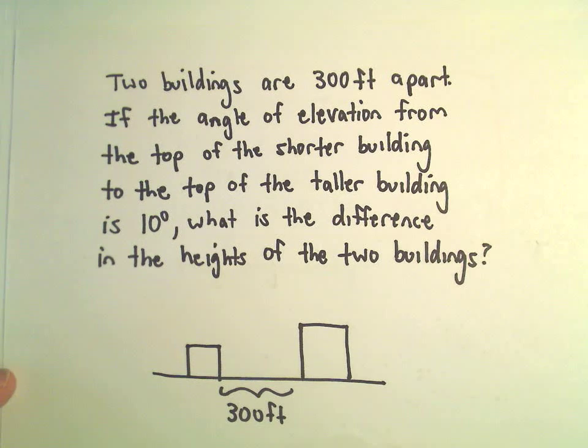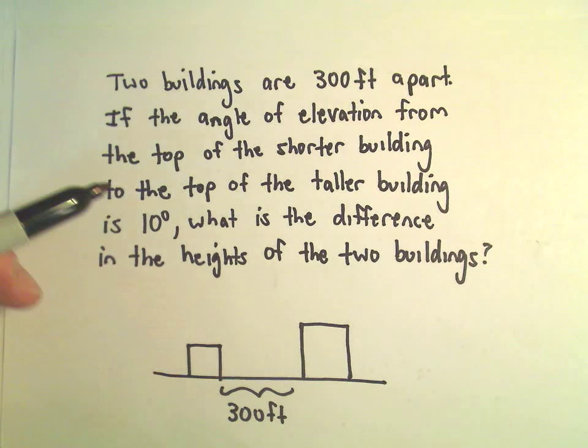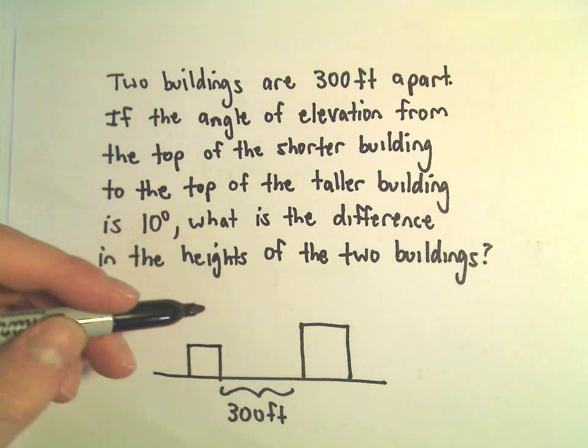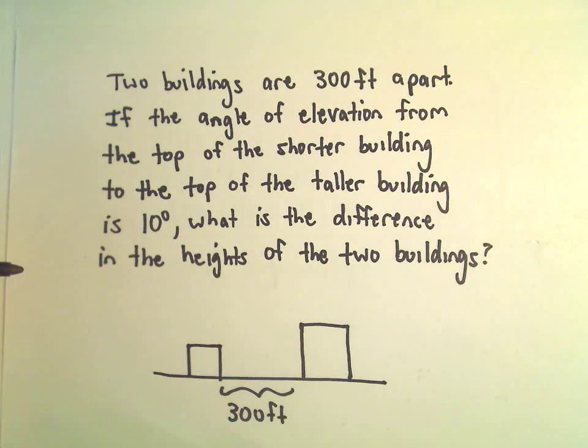And we know the angle of elevation from the top of the shorter building to the top of the taller building is 10 degrees. And we want to know what's the height difference between these two buildings.